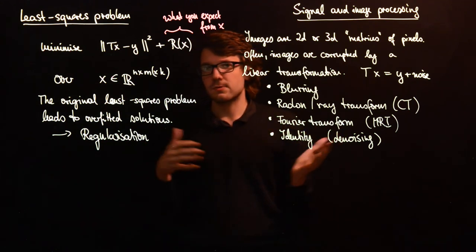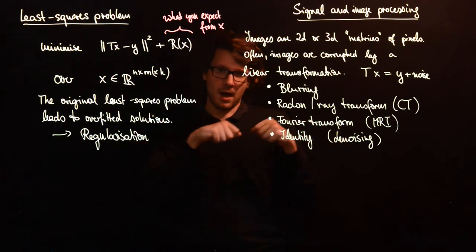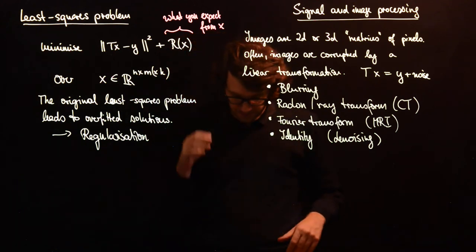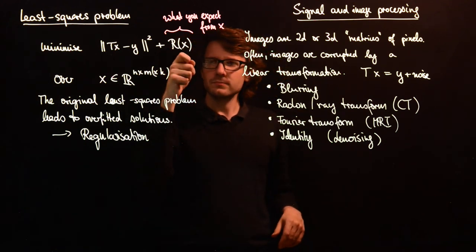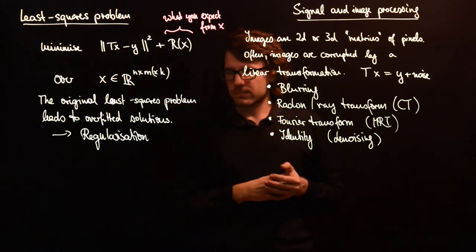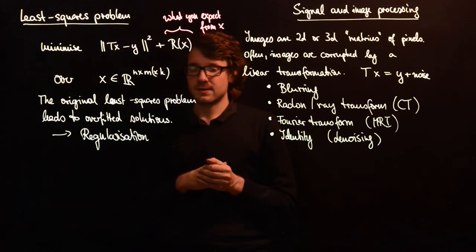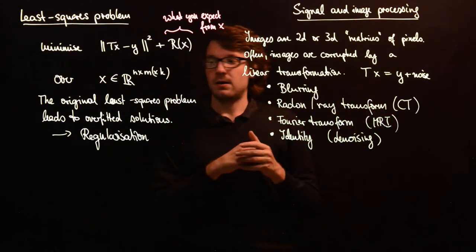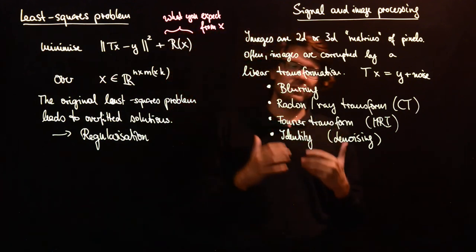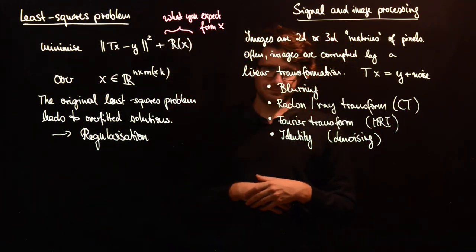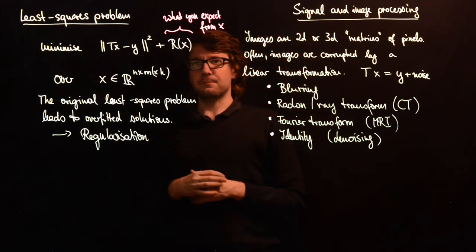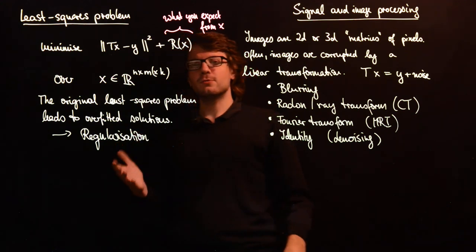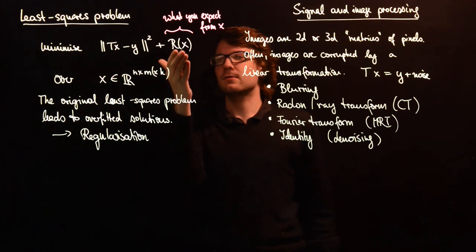Usually this is some kind of functional which penalizes high frequency noise. One typical choice would be some kind of total variation which measures the variation between neighboring pixels and sums them all up. Very often you have a functional here which wants to promote sparsity in some way. For example you want to ensure that a lot of these differences between neighboring pixels are actually zero, so they all have the same color or same attenuation or same grayscale intensity.